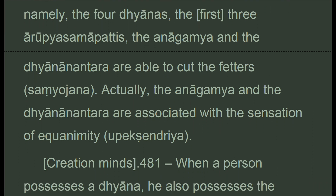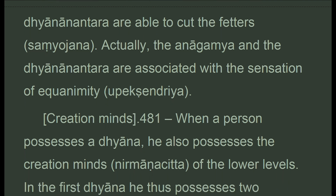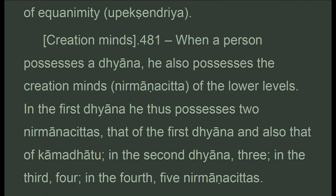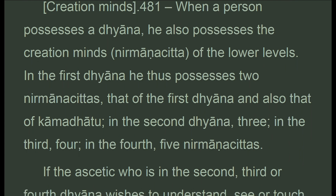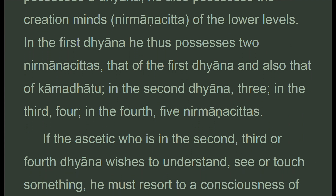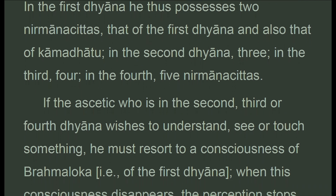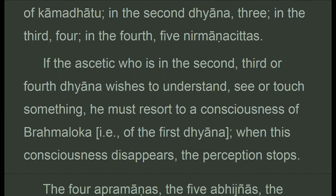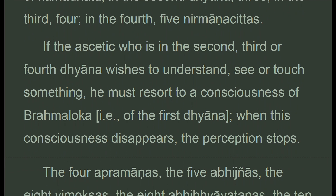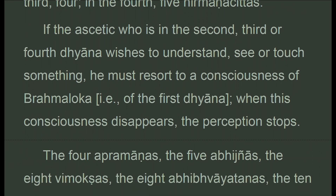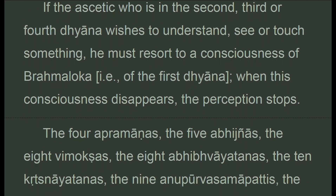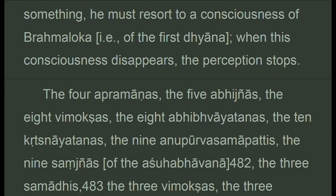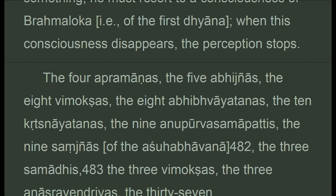The anagamya and the dhyanantara are associated with the sensation of equanimity. When a person possesses dhyana he also possesses the creation minds (nirmanachittis) of the lower levels. In the first dhyana he possesses two nirmanachittis — that of the first dhyana and that of kamadhatu; in the second, three; in the third, four; in the fourth, five. If the ascetic in the second, third, or fourth dhyana wishes to understand, see, or touch something, he must resort to a consciousness of brahmaloka, i.e., of the first dhyana. When this consciousness disappears, the perception stops.